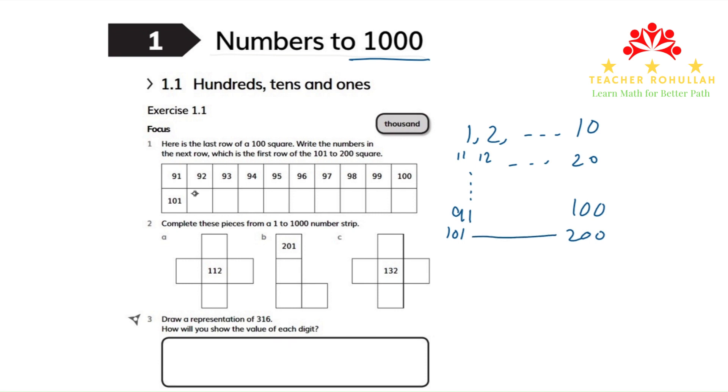101 is given here, so this one will be 102, 103, 104, 105, 106, 107, 108, 109, and 110.